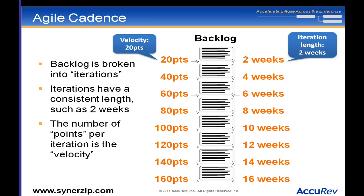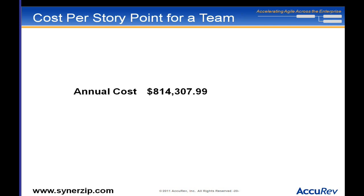Now that I have my backlog, iteration length, and velocity, what's next? I can calculate the cost per story point for a team. I go to my CFO or controller and say, 'I've got this cross-functional team — they may be virtual but all working on the same project consistently.' The fully loaded cost for this team is a specific dollar value. This is actually a real dollar value for one of our agile teams here at Accurev, consisting of a number of developers and QA folks.